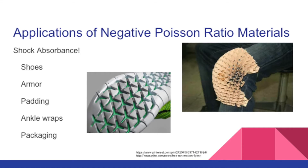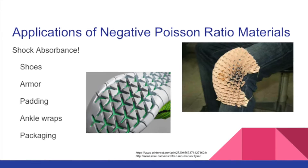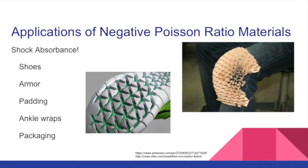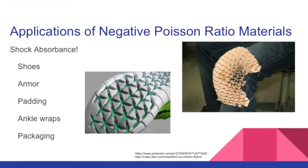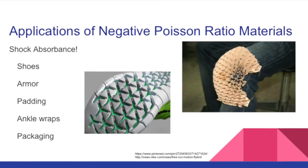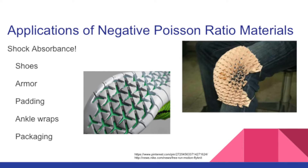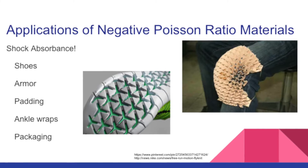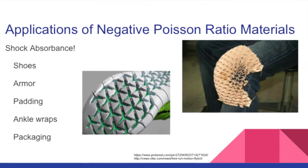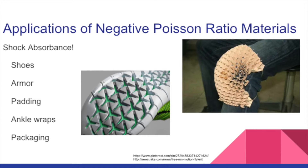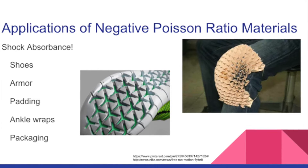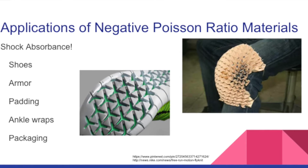Typical negative Poisson's Ratio materials can be created out of low density foams and rubbers, just by manipulating the geometry in which they are formed. They are especially applicable when creating pads and shock absorbers because they can form into dome shapes, unlike other materials.